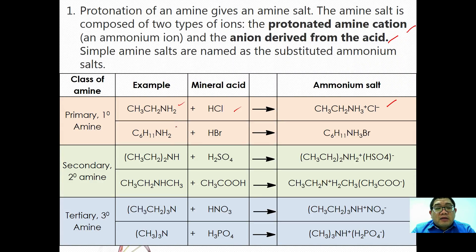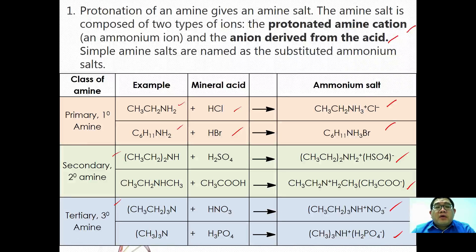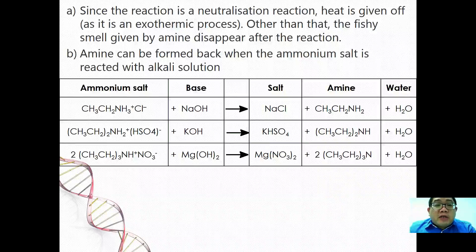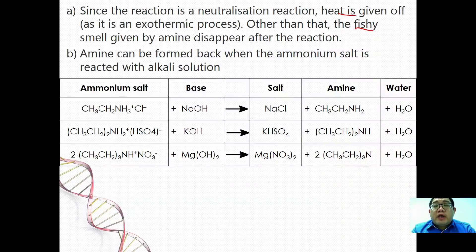For example, when you have ethanamine and you add hydrochloric acid, you form ethylammonium chloride — you form a salt. No matter which class of amine is reacted, they will form their respective salt, including when ethanoic acid reacts with amine under room temperature and pressure — they are able to form salt. Since the reaction is a neutralization, heat is given off as it is exothermic. The fishy smell given off by amine also disappears after the reaction. These are two key observations to note for these reactions.